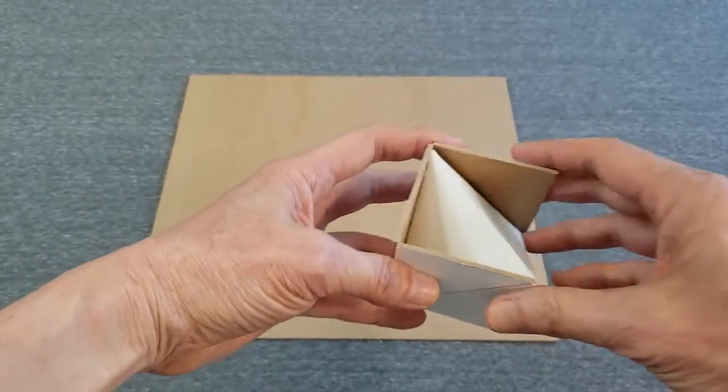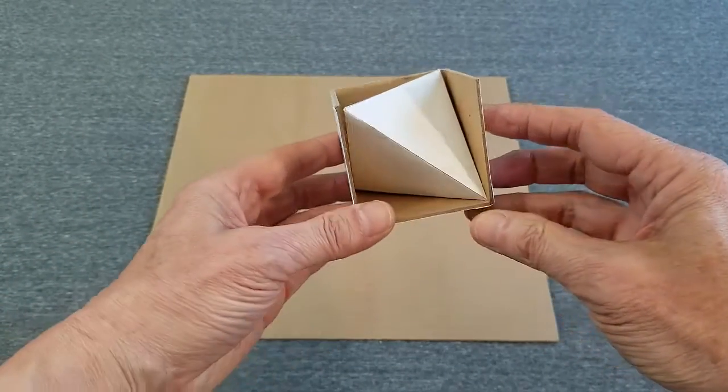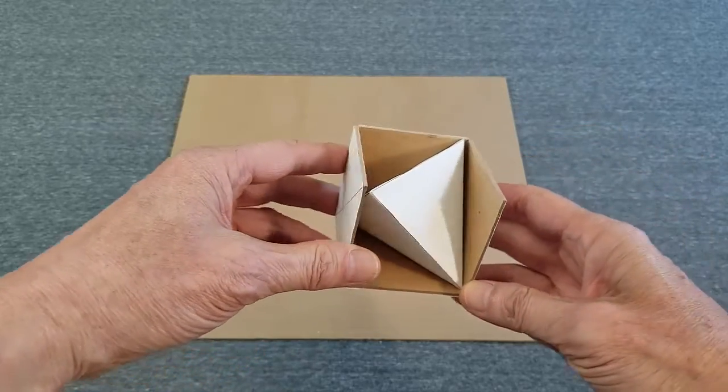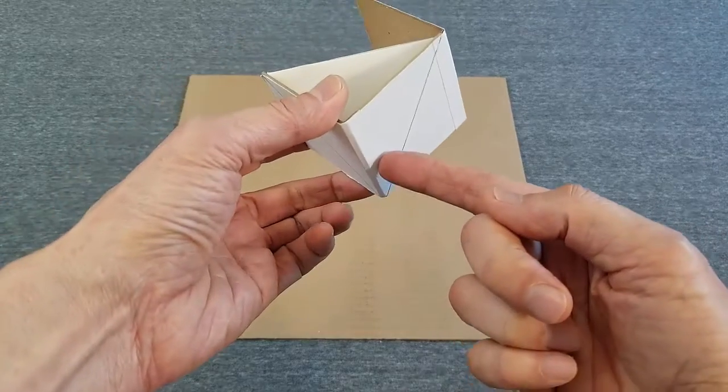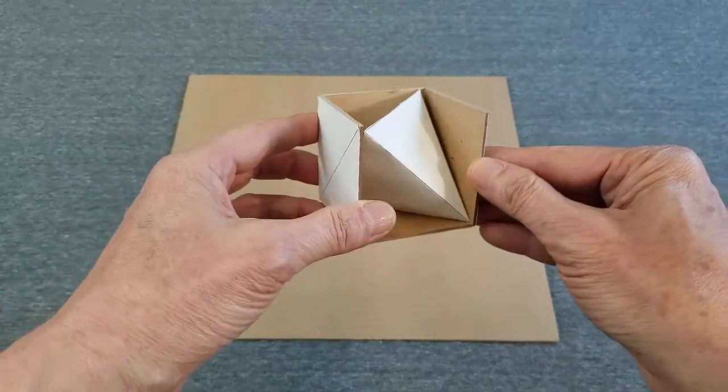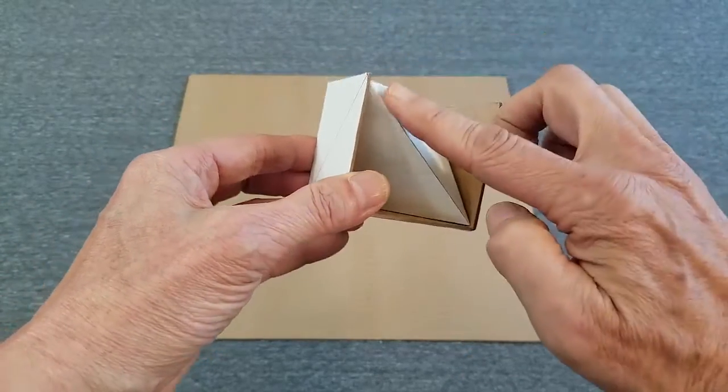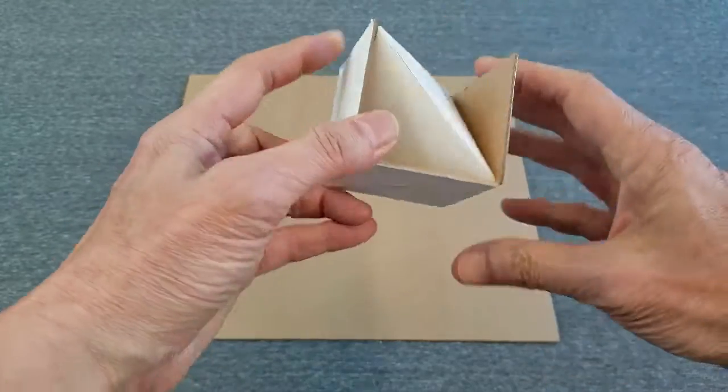A tetrahedron fits perfectly inside a cube. The vertices of the tetrahedron coincide with four of the cube vertices. The edges of the tetrahedron form diagonal lines across all six faces of the cube.